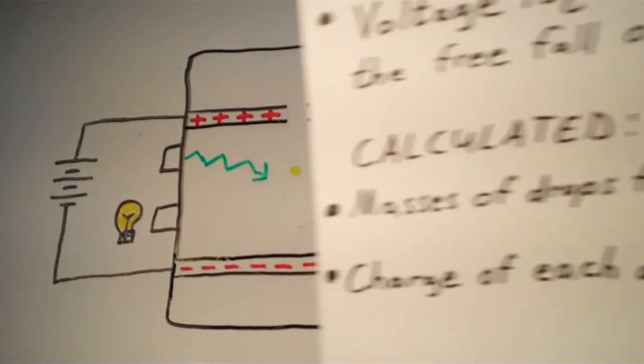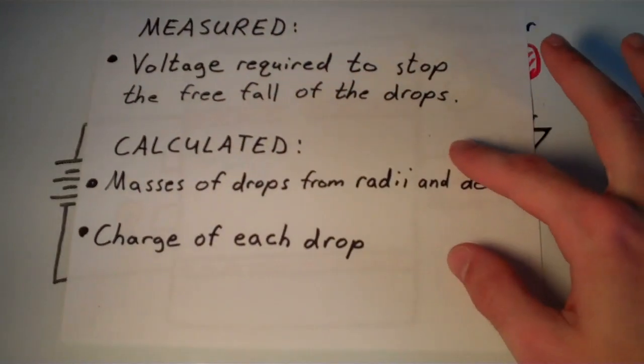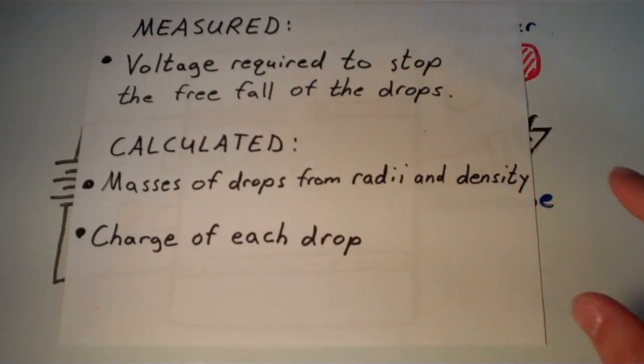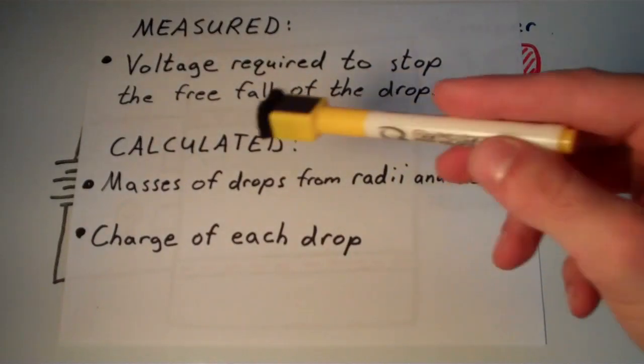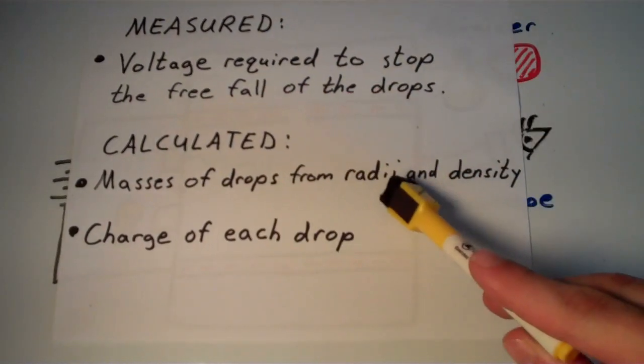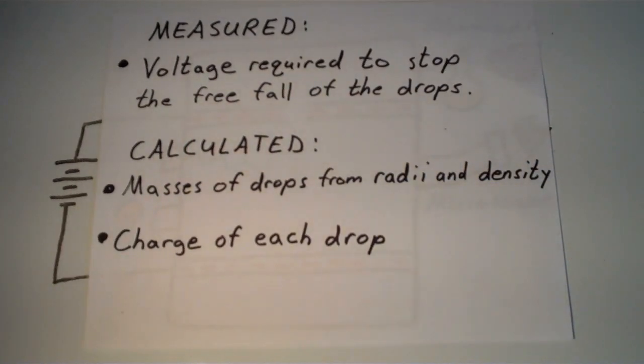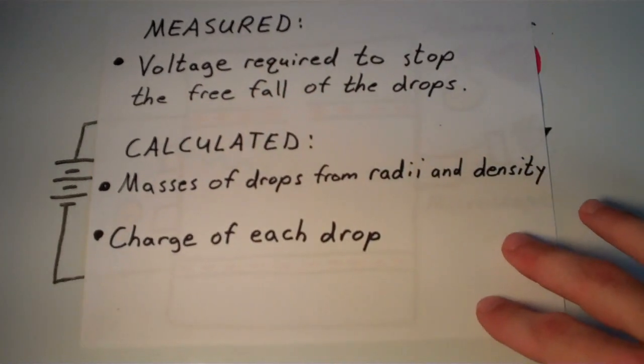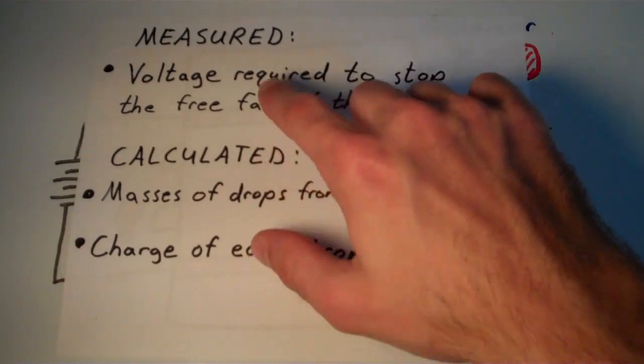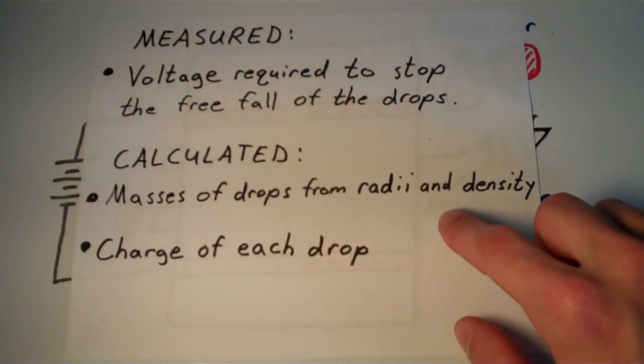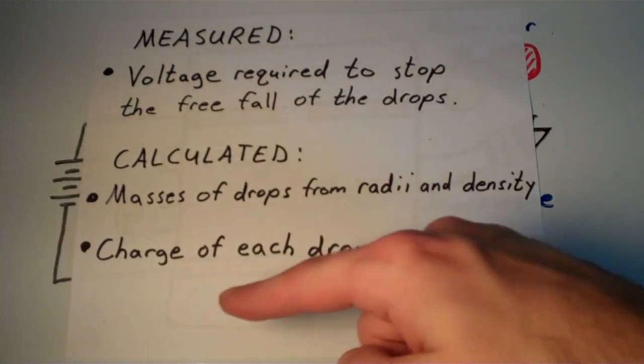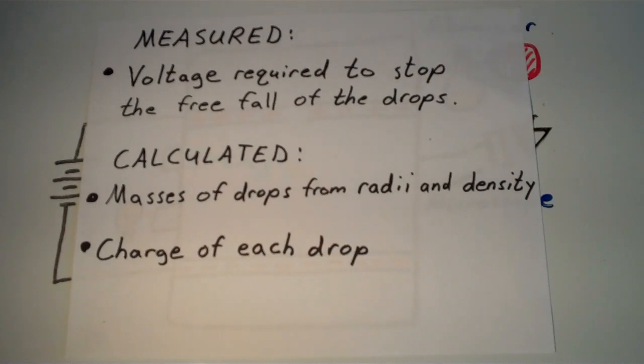And he measured the voltage required to stop the free fall of the drops, and he also calculated a couple of things. First, he calculated the masses of the drops using their radii and their density of the oil. And then using these two things, both the voltage required to stop the free fall and the mass of each drop, he was able to calculate the charge of each drop in Coulombs.